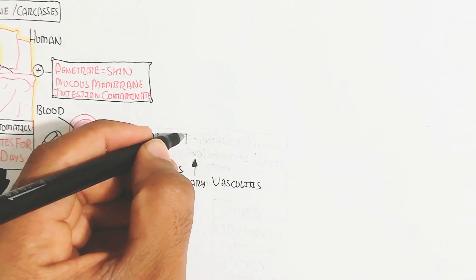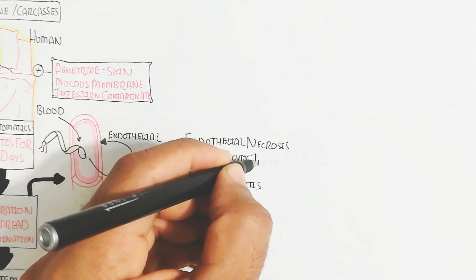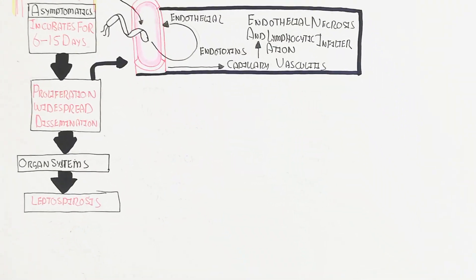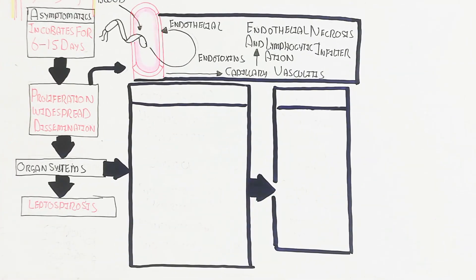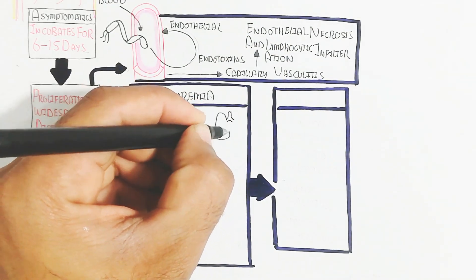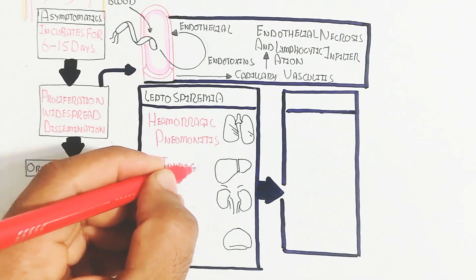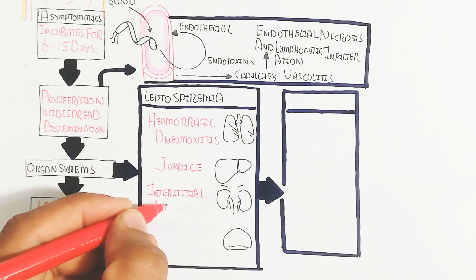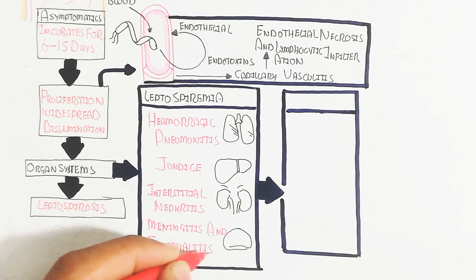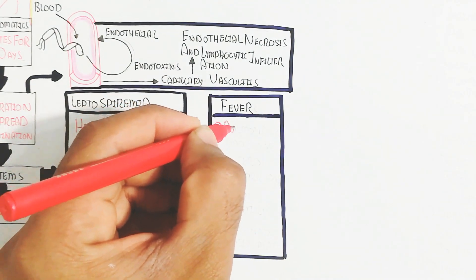The endothelial will become dysfunctional and endotoxins will be produced from the bacteria. Circulatory vasculitis will occur, leading to endothelial necrosis and lymphocytic infiltration of the organ system. Leptospiremia leads to hemorrhagic pneumonitis in the lungs, jaundice through liver dysfunction, interstitial nephritis, meningitis, and encephalitis causing fever and pulmonary hemorrhage.